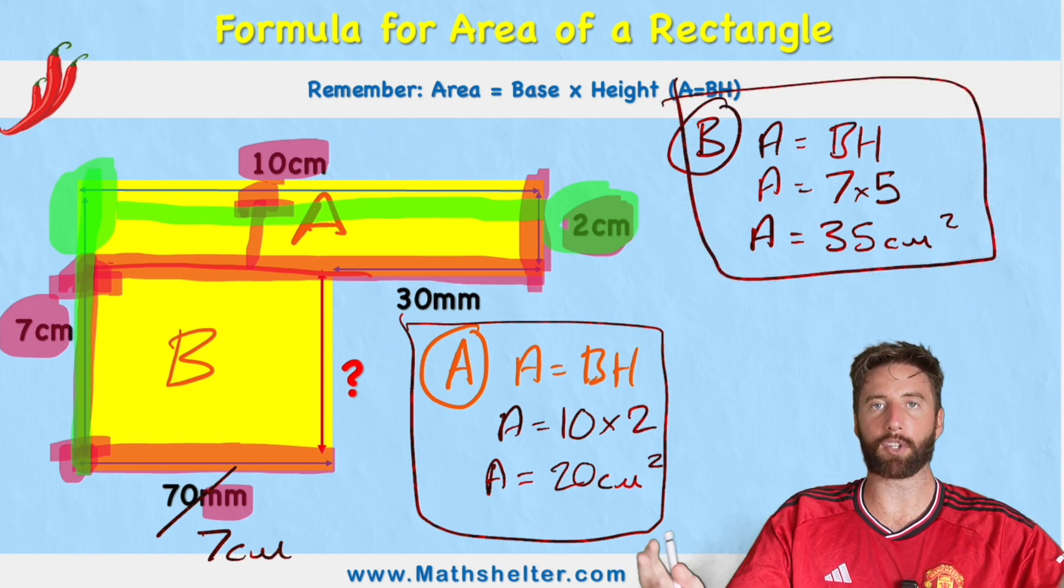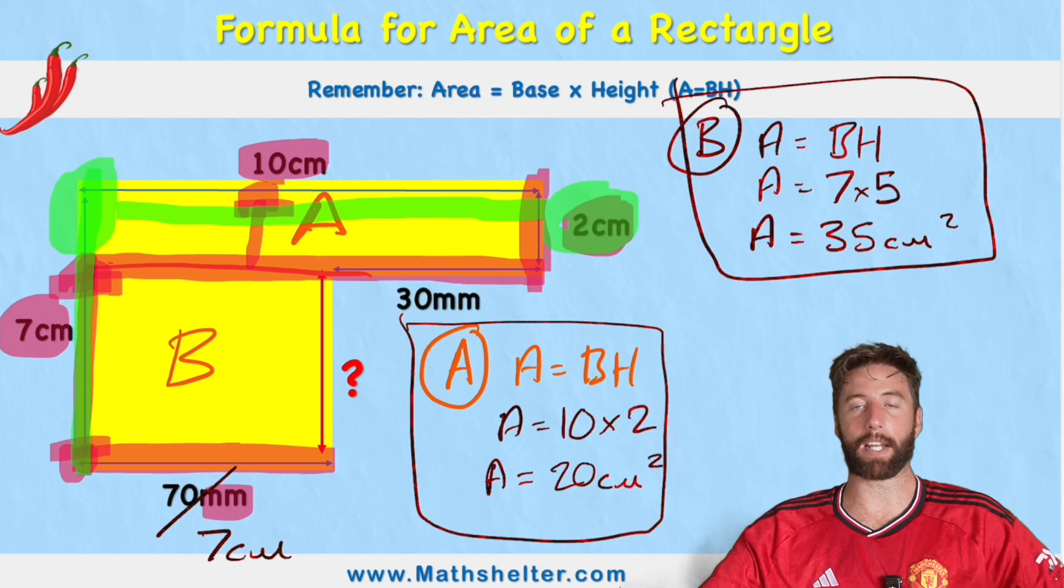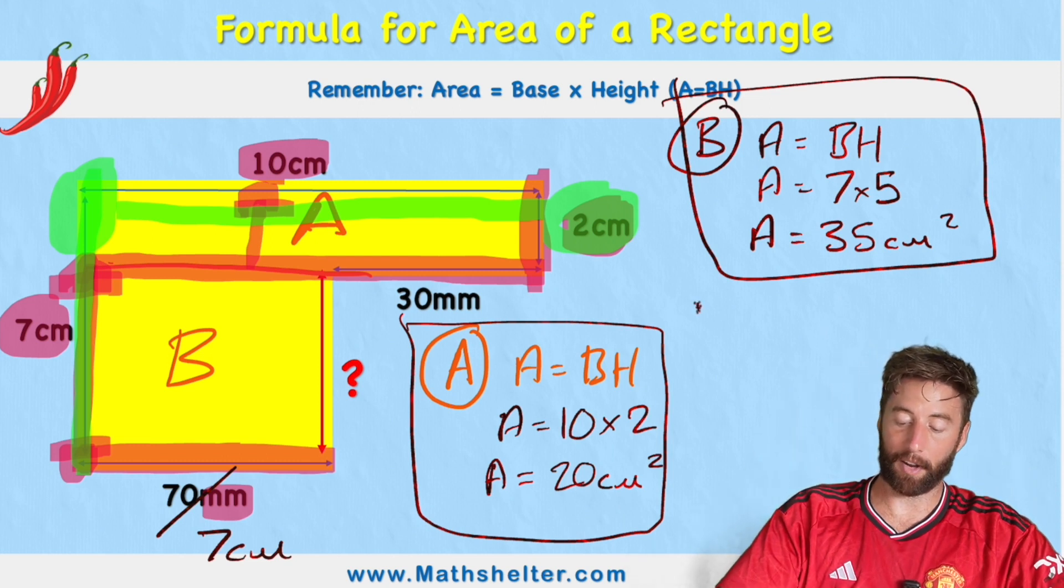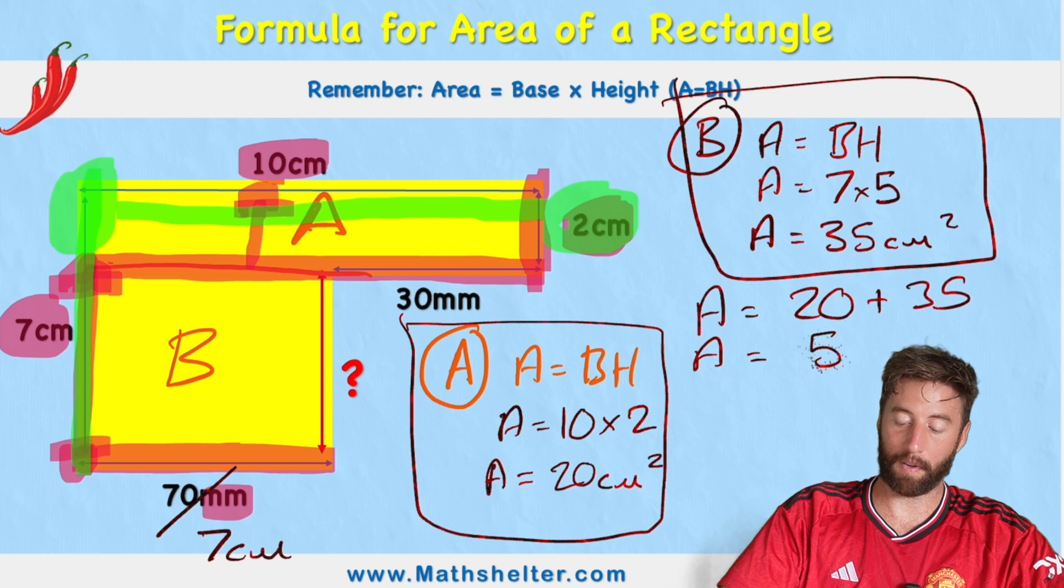But am I finished? No, because so far I've got the area of shape A and I've got the area of shape B. What do I need to do? That's right. Put them back together to get my total. So my area is going to be 20 plus 35. So therefore, my area equals 55 centimeters squared.